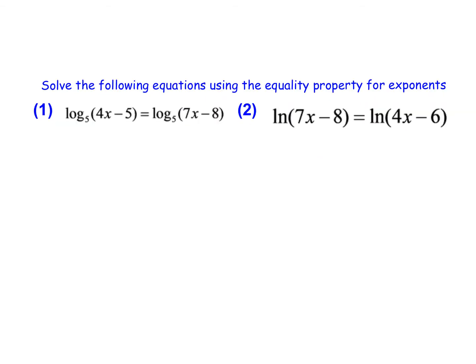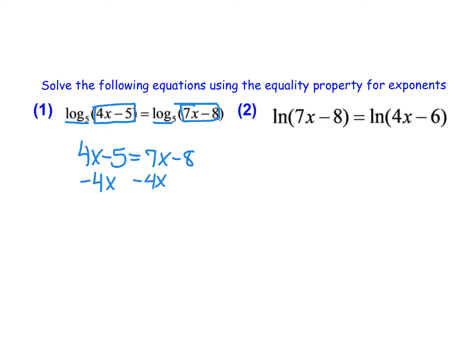Let's take a look at two examples. In example 1, I notice that I have log base 5 and log base 5 as the dominant functions on both sides of the equation with expressions inside of them. Because these logs have the exact same base and nothing else outside of them, I can set their insides equal to each other. From here I can solve — getting the x's on the same side by subtracting 4x from each side and adding 8 over. So I have 3 is equal to 3x, divide by 3, and x is equal to 1.